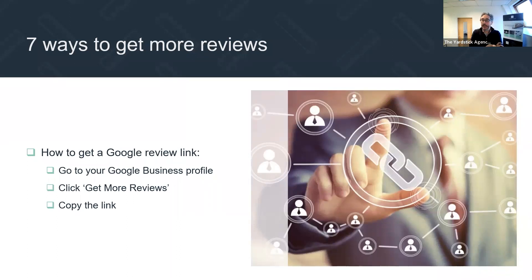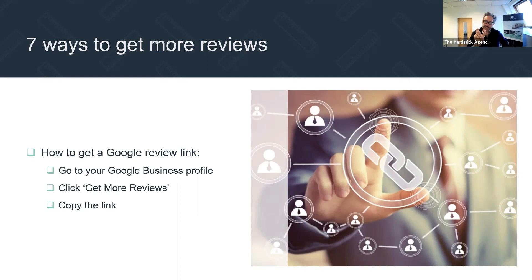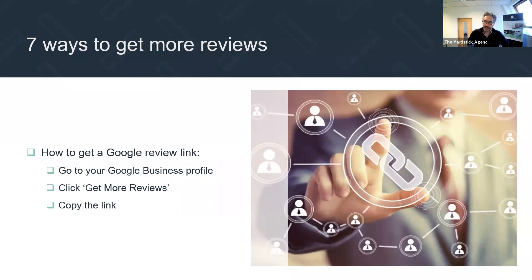Ways to get more Google reviews — we need a link. The Google review link used to be horrible, massively long. Still doesn't look much better now but it's shorter. The way to get it is just go to your Google business profile, scroll down, there's a little button that says 'Get more reviews.' The pop-up will come up and you can just copy the link in there. Really important practical point: that's how to get your link.